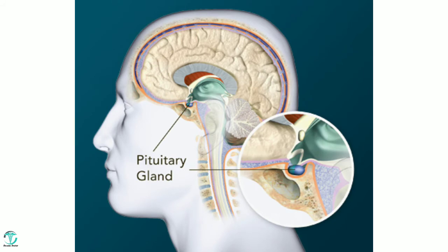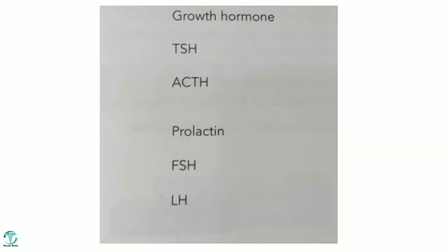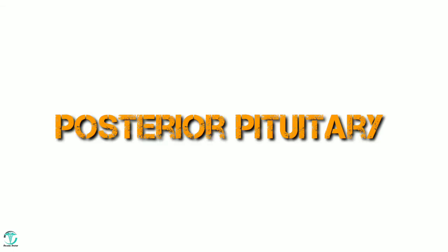The pituitary gland has two parts — anterior pituitary and posterior pituitary. It is located below the hypothalamus, connected by the pituitary stalk. The hormones secreted by the anterior pituitary are: first growth hormone, second TSH (thyroid stimulating hormone), third ACTH, fourth prolactin, fifth FSH (follicle stimulating hormone), and sixth LH (luteinizing hormone).